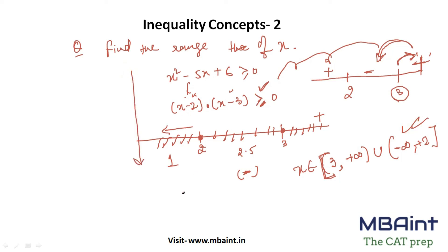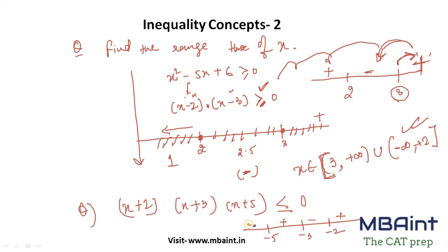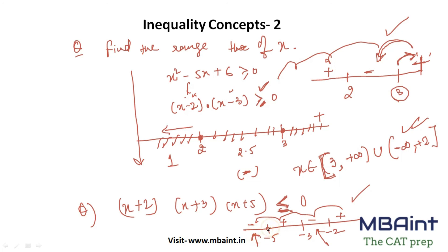If there are more factors, say 3 factors like (x + 2)(x + 3)(x + 5) and they ask you to get less than or equal to 0, you can directly place them on the number line: minus 2, minus 3, and minus 5. The right extreme side is positive, then negative, then positive, then negative — it alternates. Since the intention here is less than or equal to 0, your solution will be between the relevant regions and also less than or equal to minus 5. I hope this is clear, and in the next video we are going to see some good level questions.